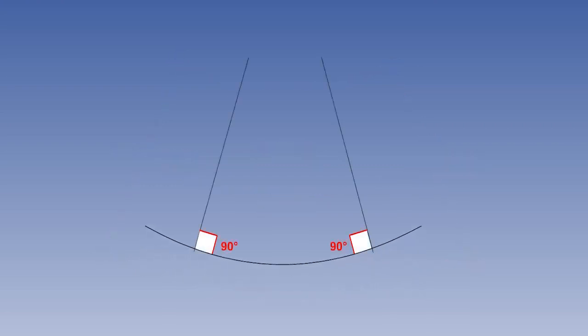The graticule is not rectangular, so the plotting of positions is not as straightforward as on a Mercator.